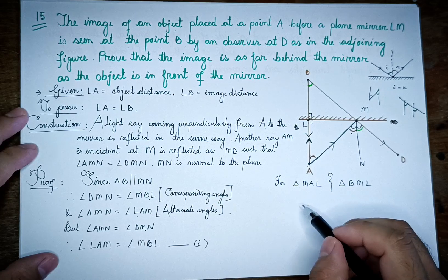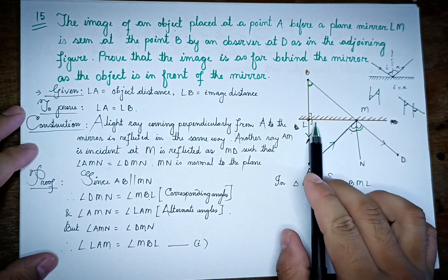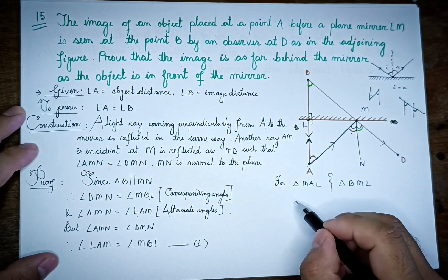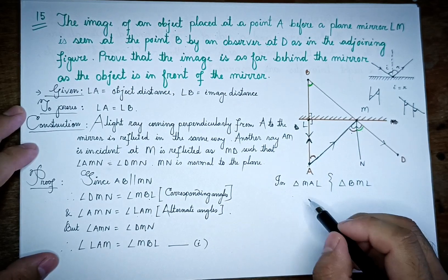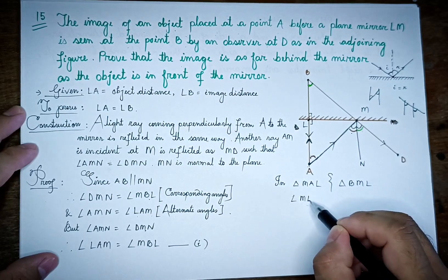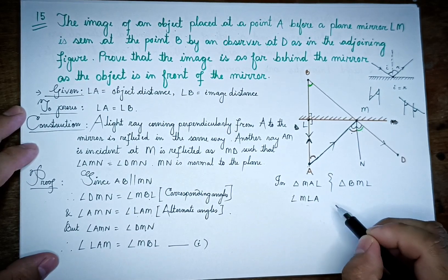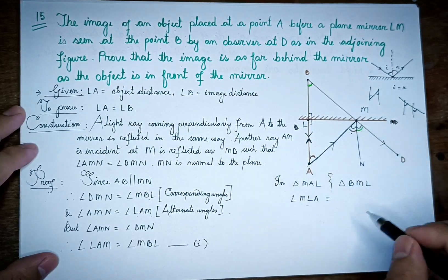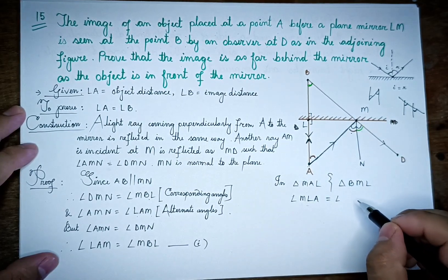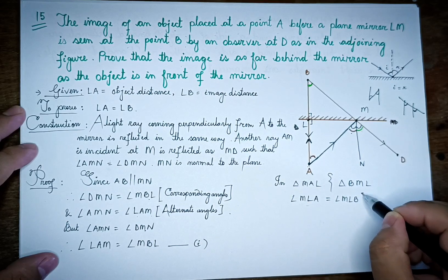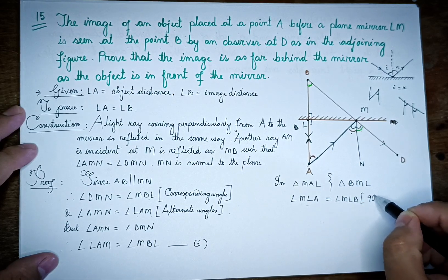In triangle LAM and triangle BML, there is a common angle and a 90-degree angle. The angle MLA is 90 degrees, and the angle MLB is also 90 degrees, since LM is perpendicular to AB.